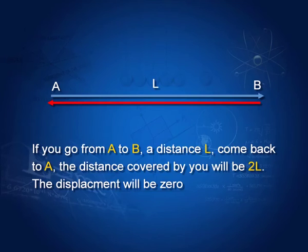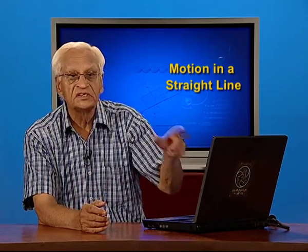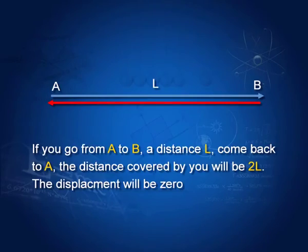If you go from A to B and go from B back to A, your distance covered would be twice the distance between A and B, that is 2L. Whereas the displacement would be 0, because you started from A and have come back to the point A.